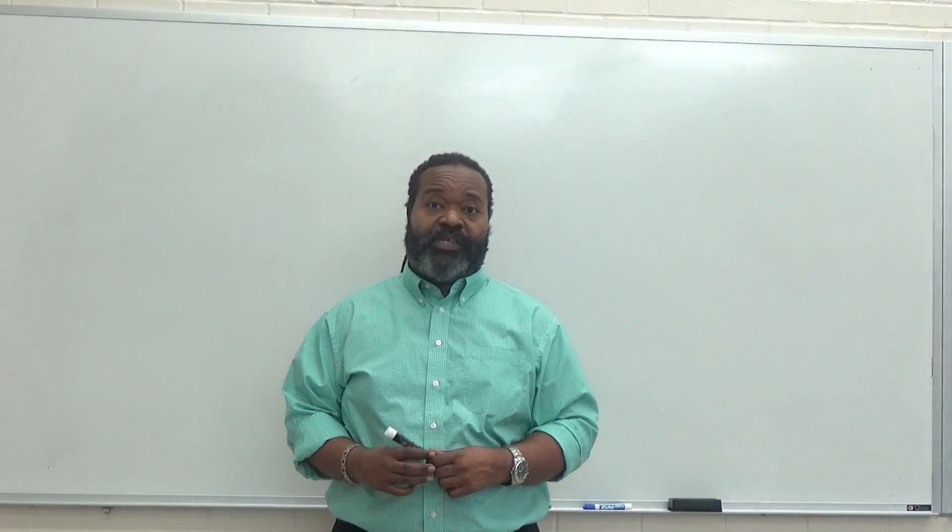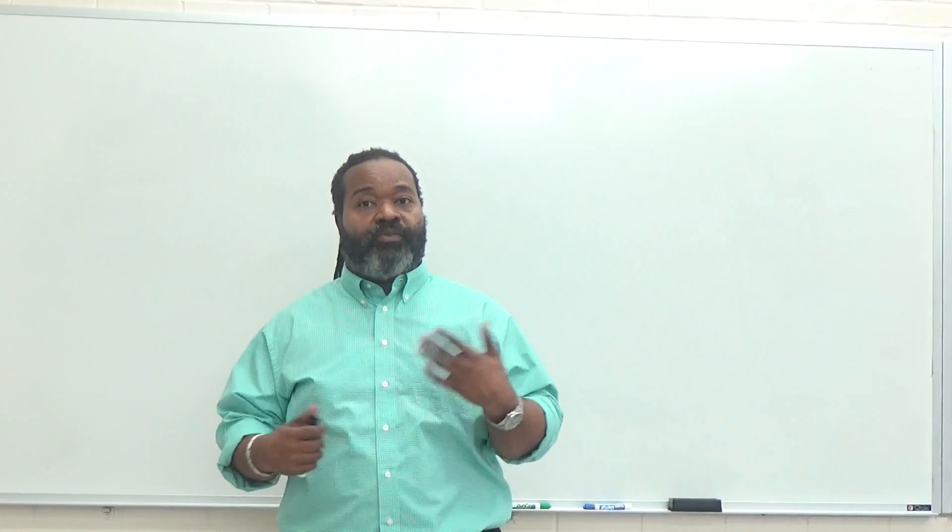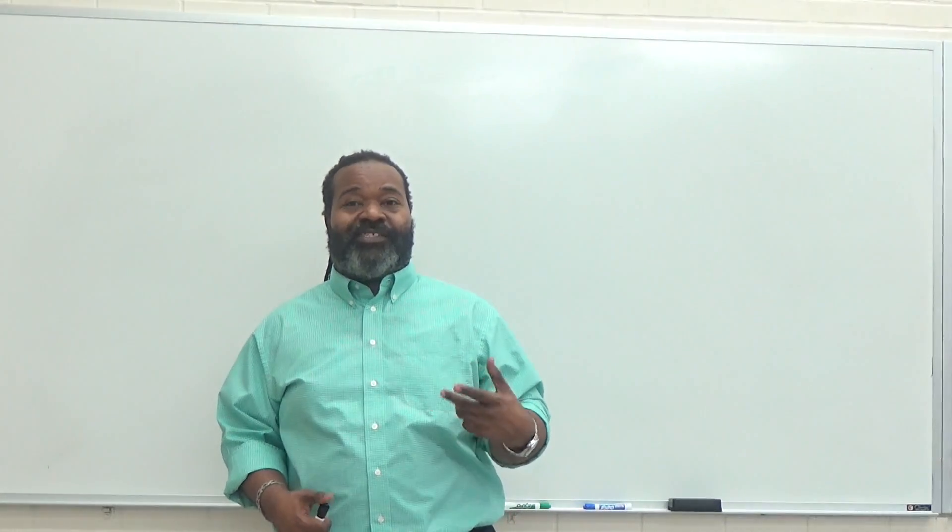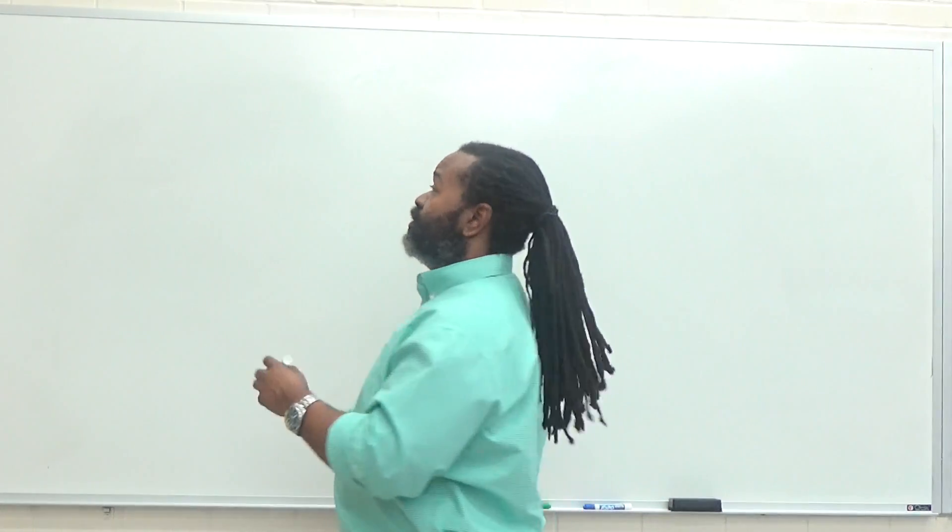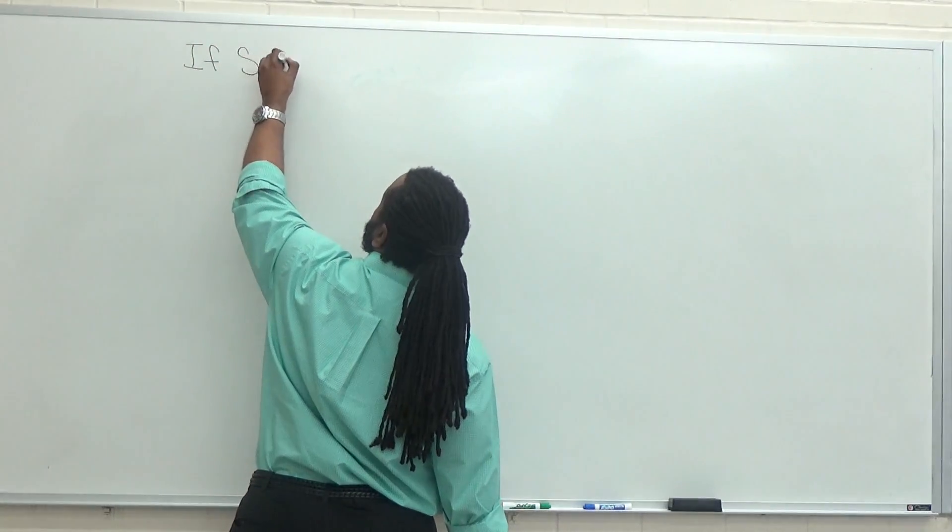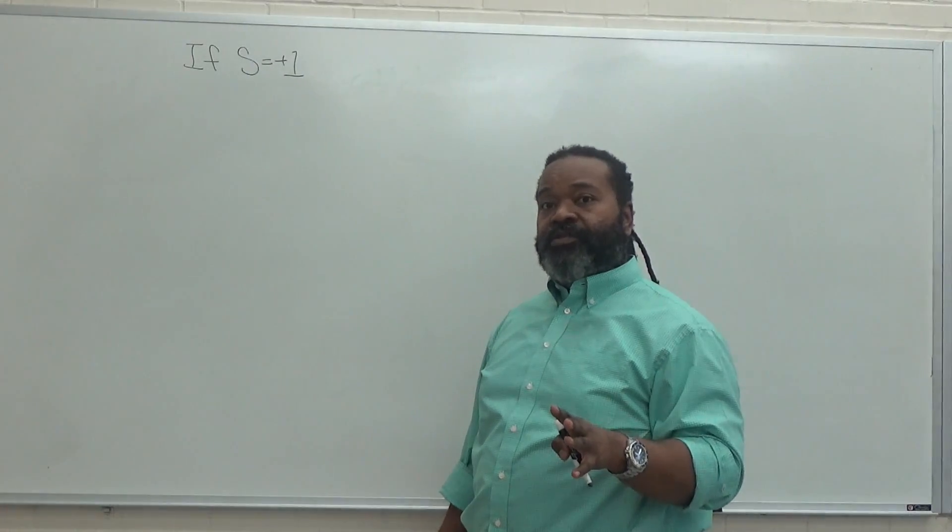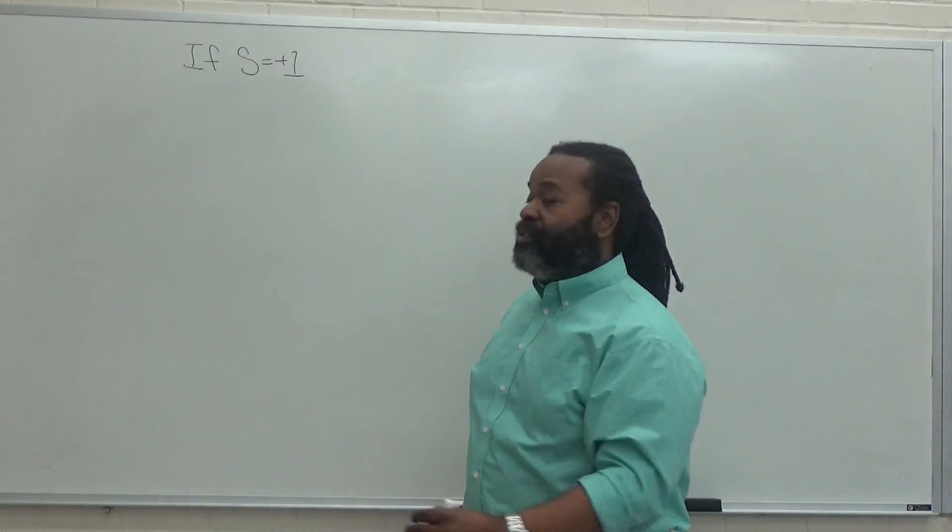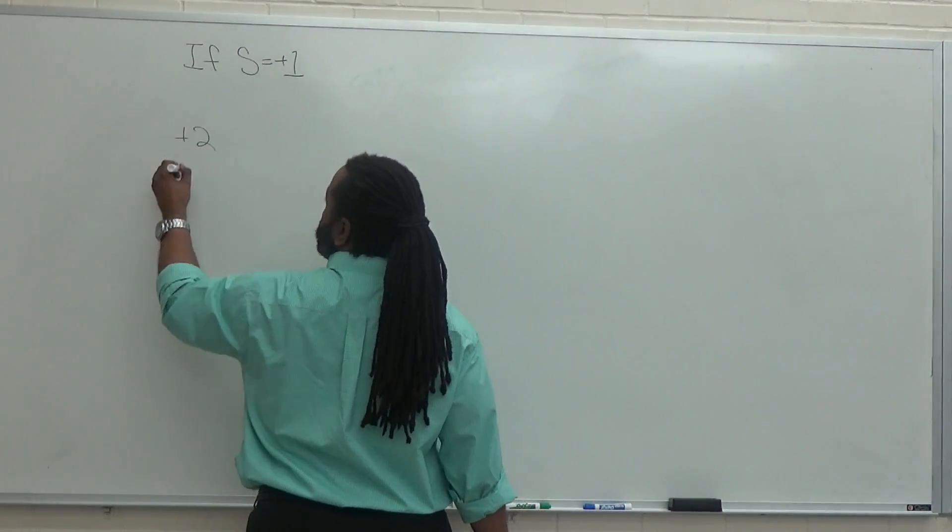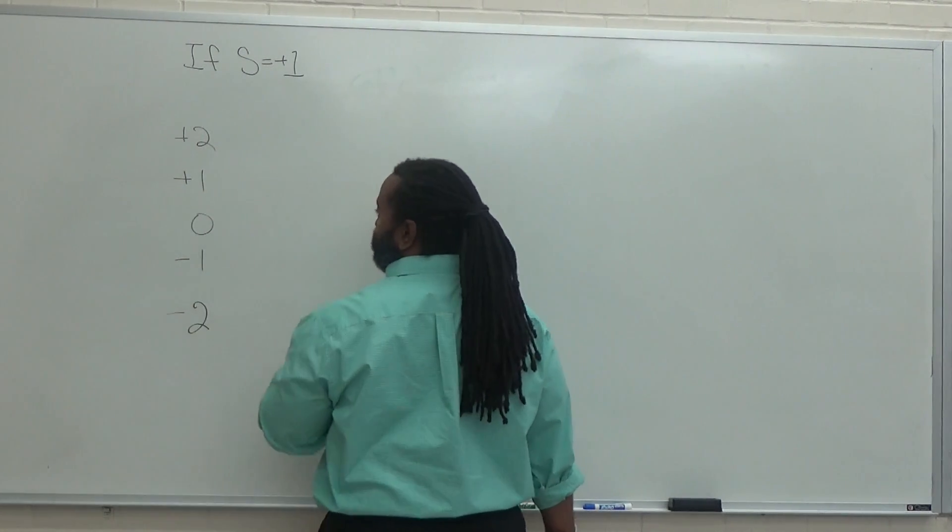Step three in the full microstates method requires us to write out all the possible states. Now, because of step one and two, we figured out the range of values for L and the range of values for S. This tells us how many different charts we would need to write out and how many lines we would have for it. So we'll start by saying if our S is plus one. So if S is plus one, that means that both of the electrons are going to be spinning up. And now we can have the range of L starting at plus two, plus one, zero, minus one, and ending at minus two.